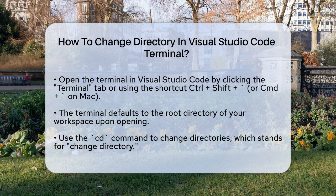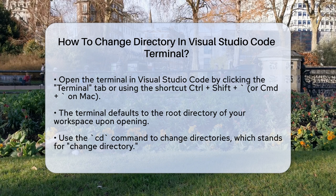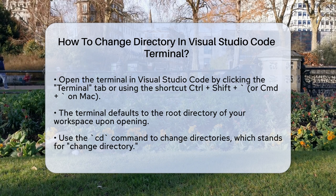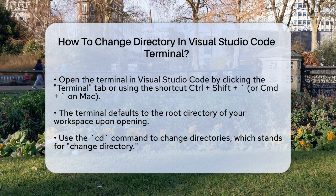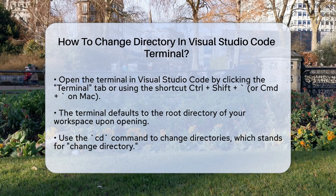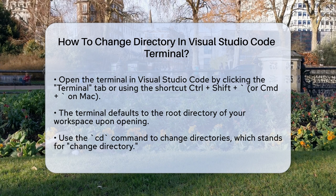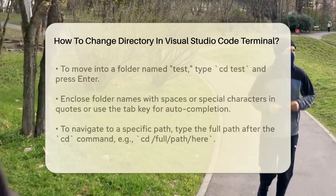First, you need to open the terminal in VS Code. You can do this by clicking on the Terminal tab in the menu bar or by using the keyboard shortcut Control+Shift on Windows and Linux, and Command on Mac. Once the terminal is open, you'll see it defaults to the root directory of your workspace.